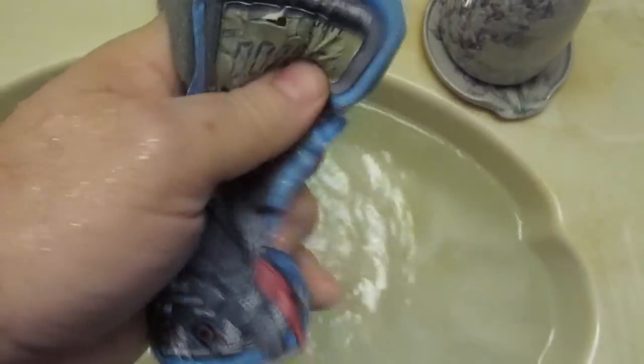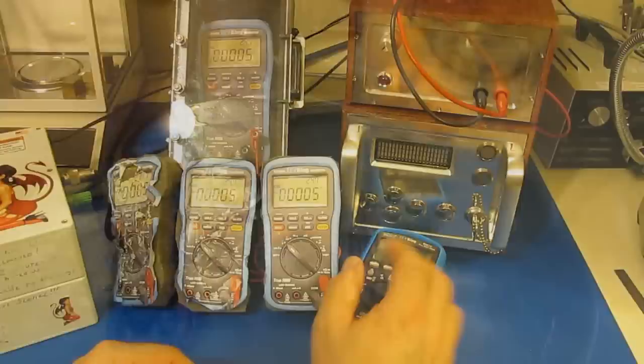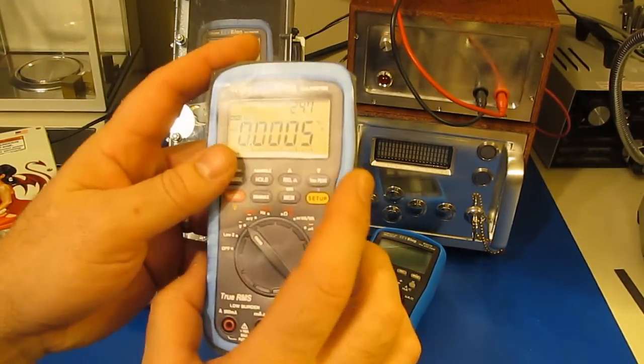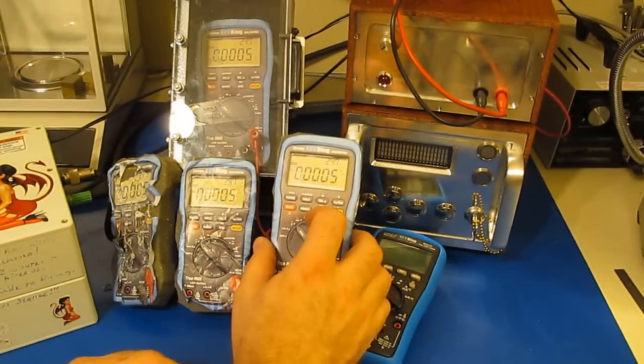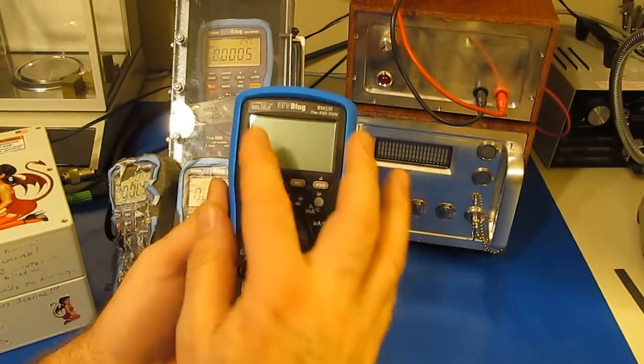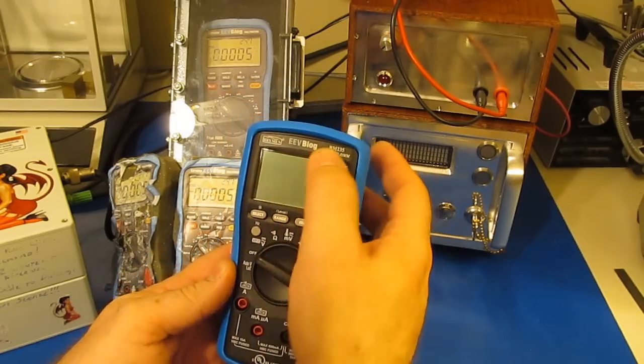So obviously I really have no idea how the real 121 GW is going to perform on these tests, but I do have a pretty good idea that Dave isn't going to let it out with his name on there if it's not going to at least perform as well as this BM 235 does.